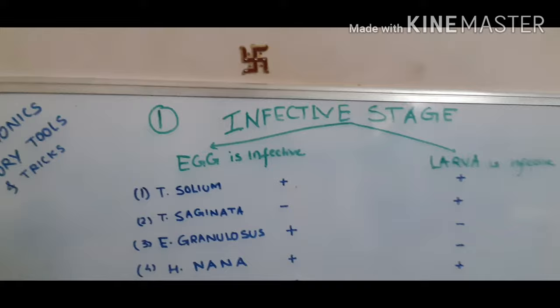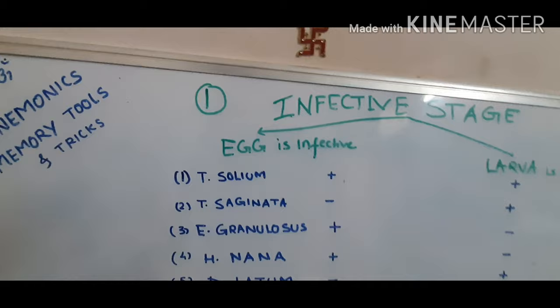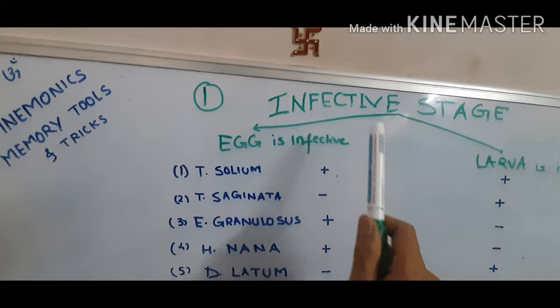These two topics are very important and this is from microbiology. The first topic is infective stages. We see two stages — a few species have eggs as their infective stage and other species have larvae as their infective stage.